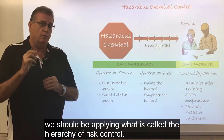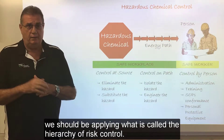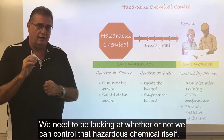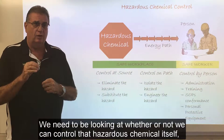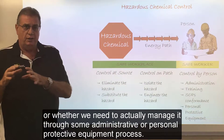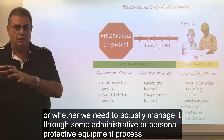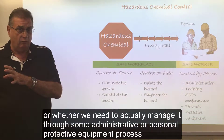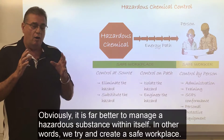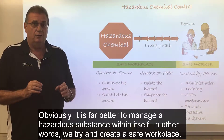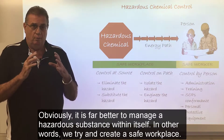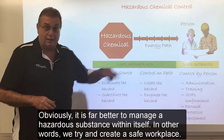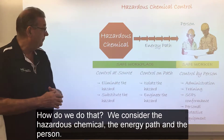We then decide what we need to do in relation to that hazardous chemical, and we should be applying what is called a hierarchy of risk control. We need to be looking at whether or not we can control that hazardous chemical itself, or whether we need to manage it through some administrative or personal protective equipment process. It is far better to manage a hazardous substance within itself — in other words, we try and create a safe workplace.